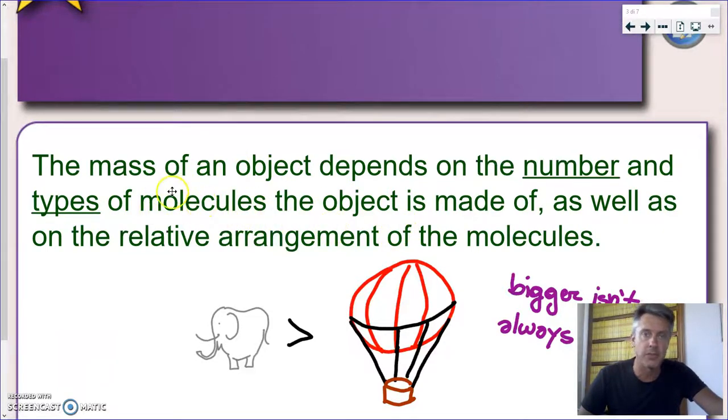That is the most common misconception, mass versus weight. So this is what mass depends on. And of course, in our experience, a larger object is usually more massive. We can also say heavier, but let's say more massive. Of course, that is not always the case.